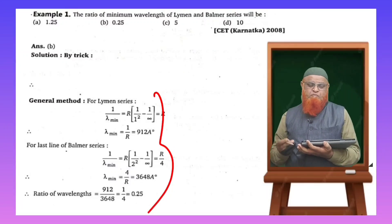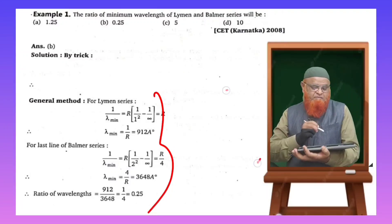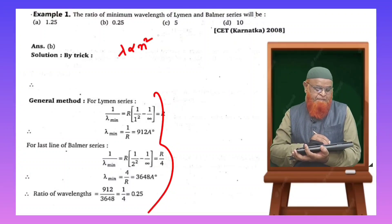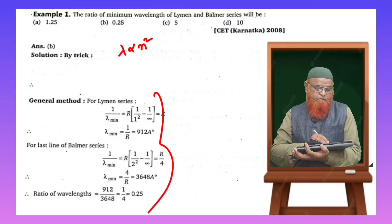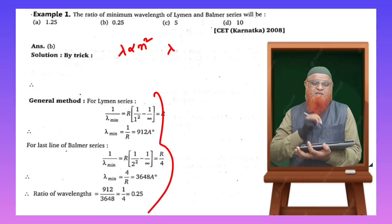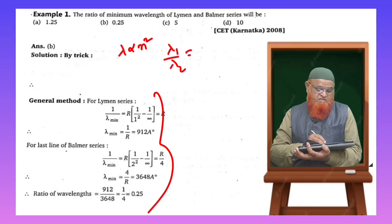Instead of this lengthy method, you can do a wonderful trick here. Wavelength is directly proportional to n square, where n is the principal quantum number. You can write lambda 1 by lambda 2 is equal to n1 by n2 whole square.